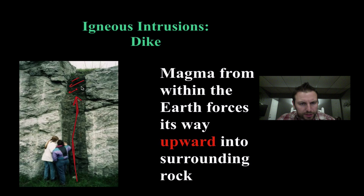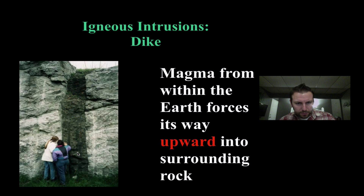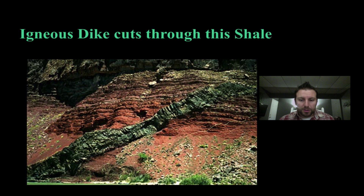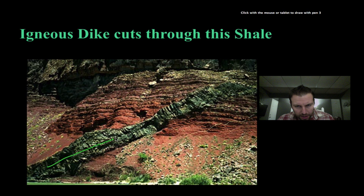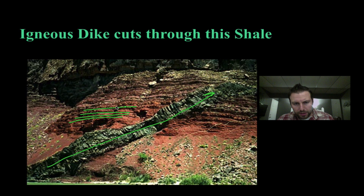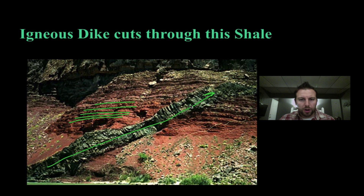Notice we can see a very clear difference in color right here — different color, most likely different minerals making it up. We can see intrusions like this where one cuts up and through. We have these nicely deposited horizontal layers, and then all of a sudden this intrusion comes up through in a darker gray color. That magma comes up and through, the rock cools and hardens in place.